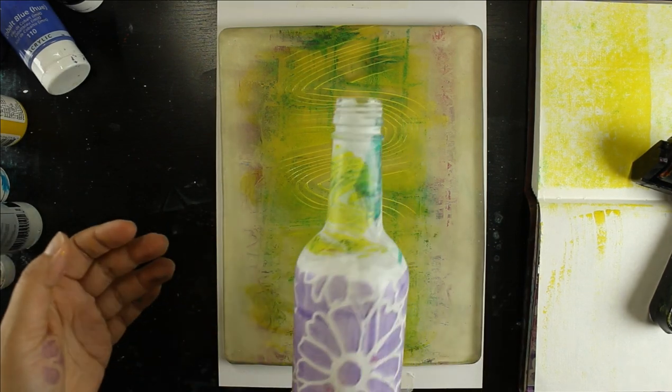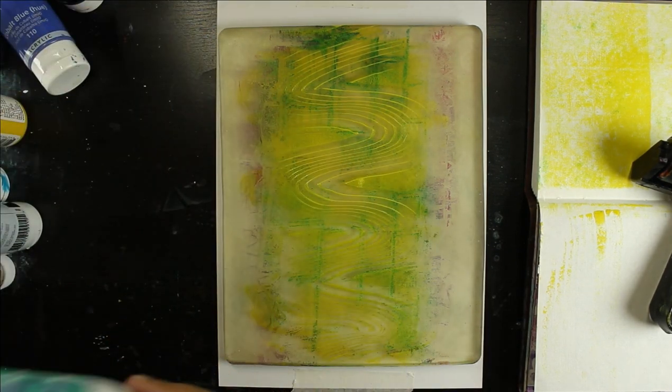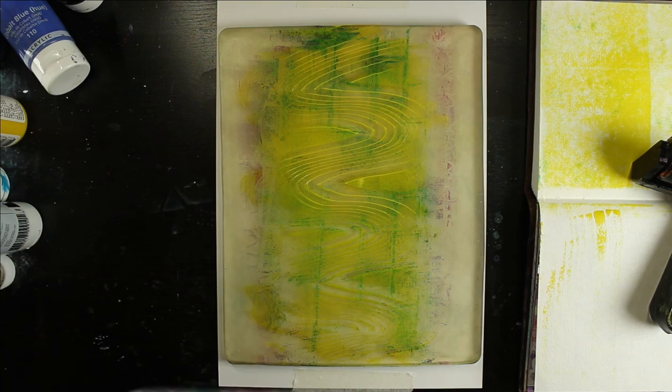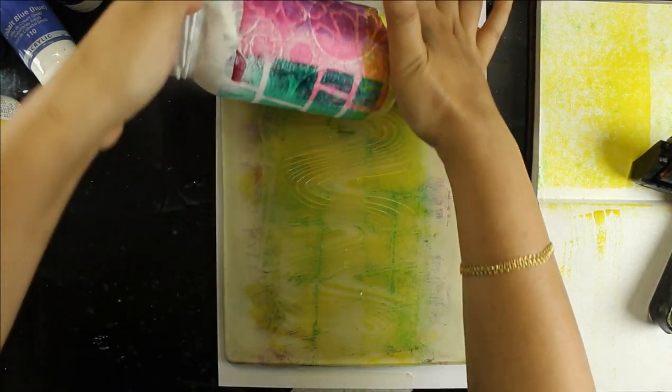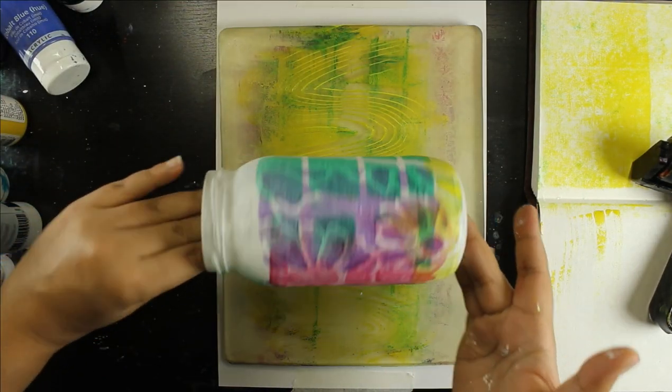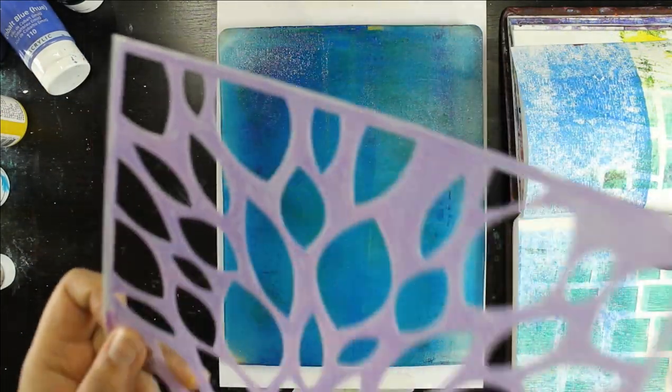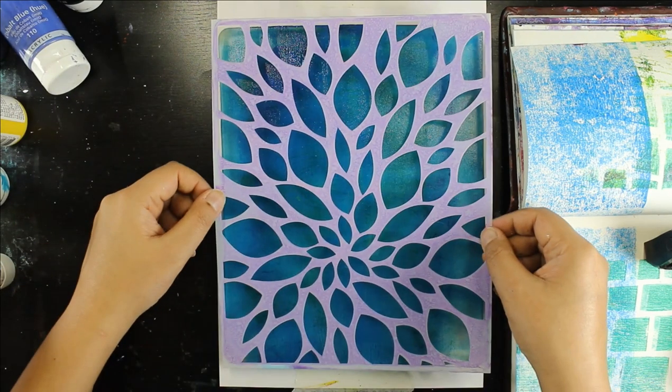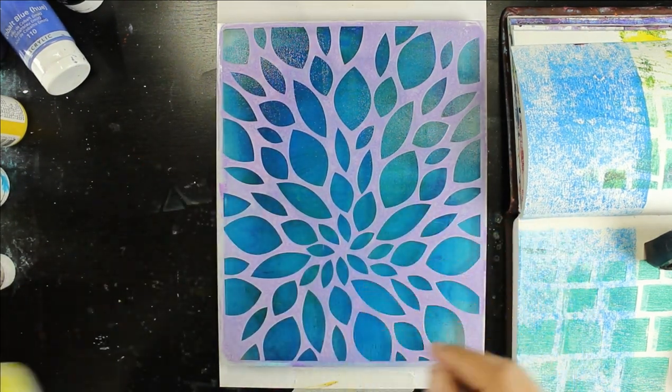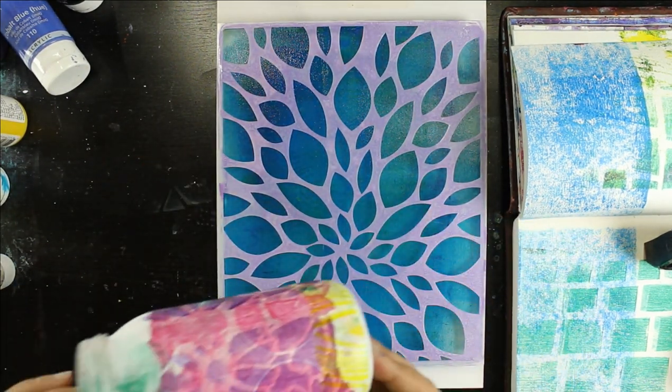And here you can see I am still picking up the gel plate in parts so that it curves into all the nooks and crannies of the bottle and the jar. And next I am using this flower outline stencil. This is also by Jelly Arts as well.